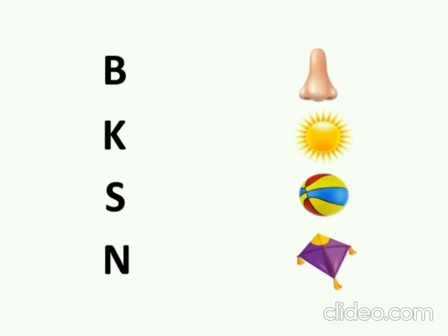The next letter is capital B. Sound of B is B. Ball. So B for Ball. We will match B with Ball. The next letter is capital K. The sound of K is K. Kite. K for Kite. We will match K with Kite.